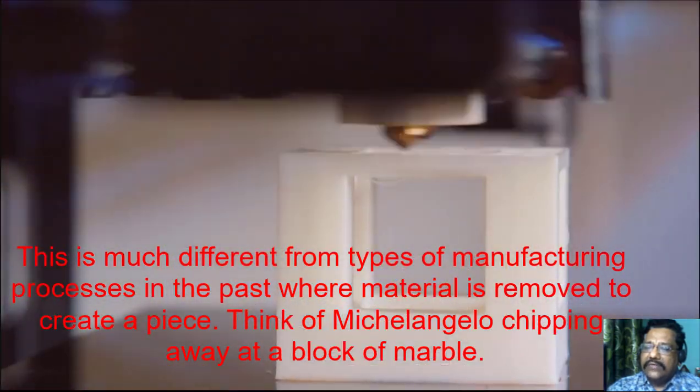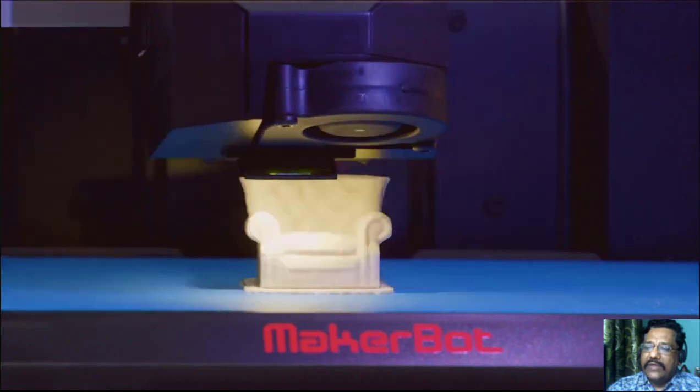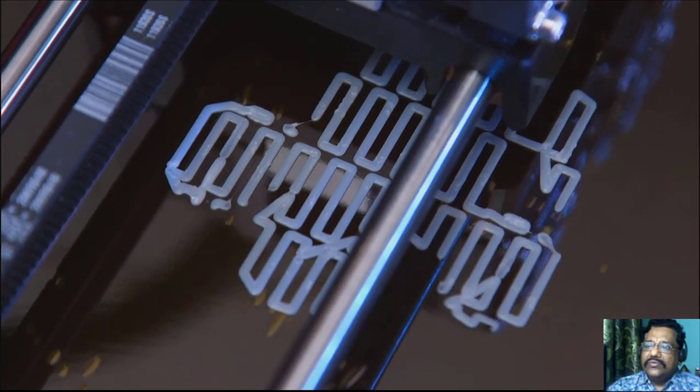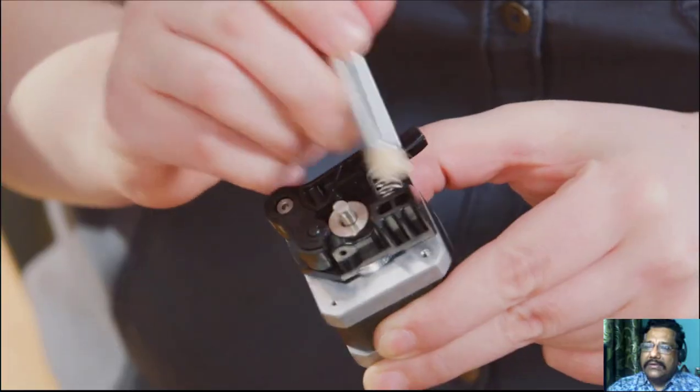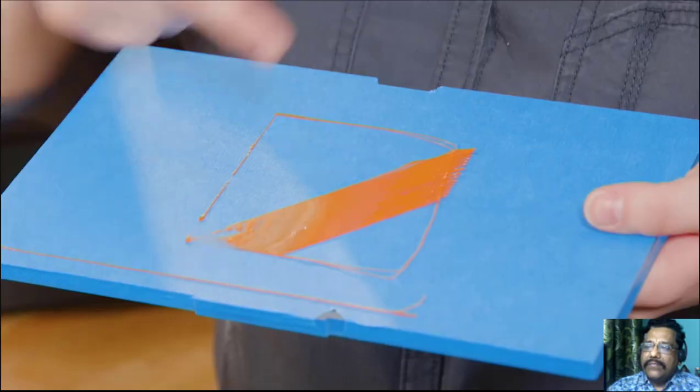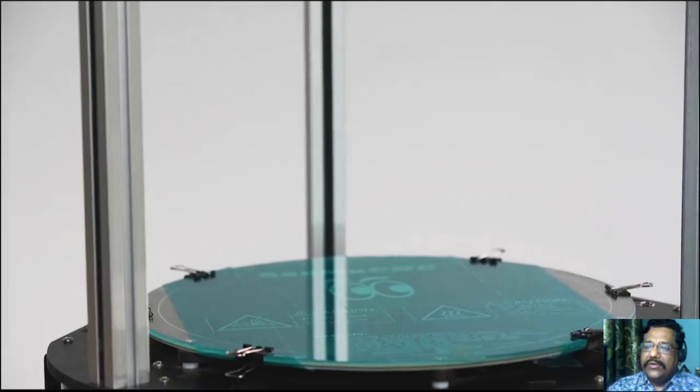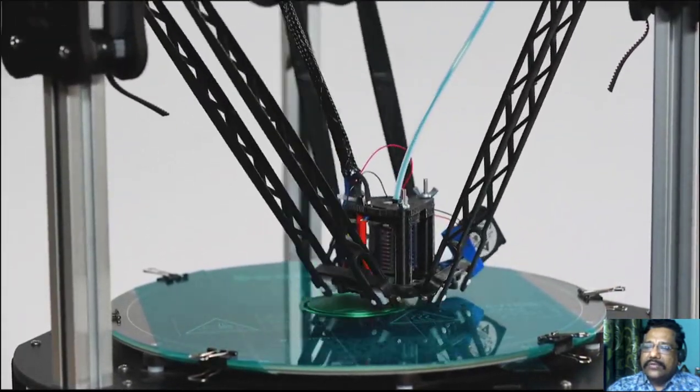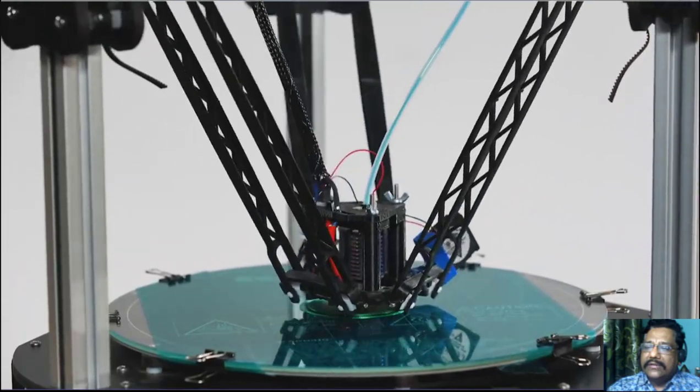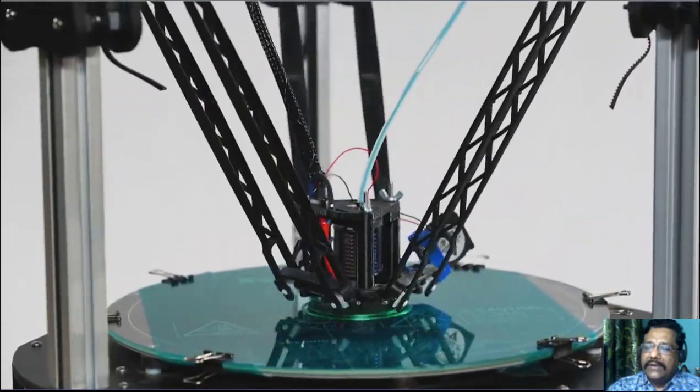They all involve adding things to other things to create the shape. This is a lot different than other manufacturing processes. If you think of an artist creating something from marble, you start with a block and chip pieces away.